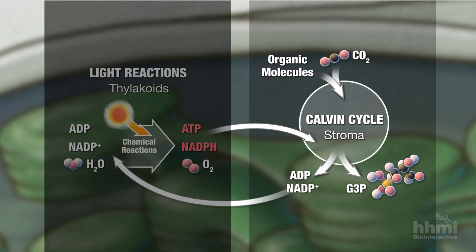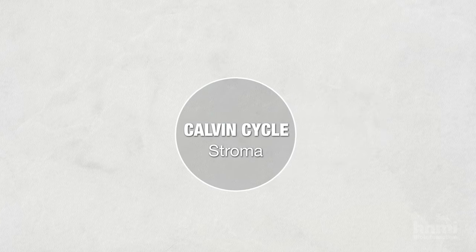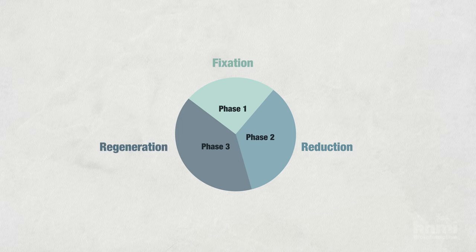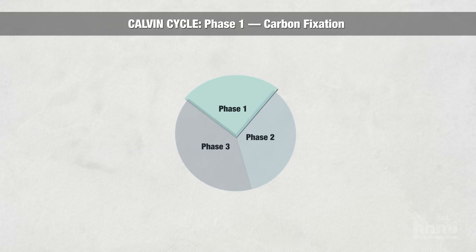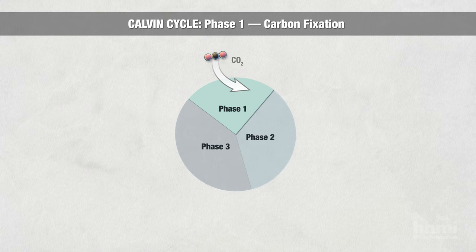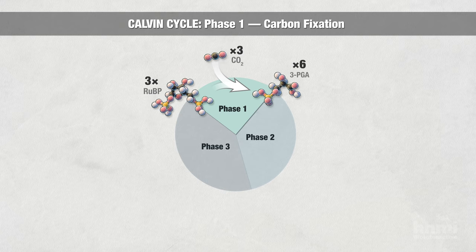The Calvin cycle takes place in the chloroplast's stroma, the watery clear fluid surrounding the thylakoids. It's helpful to think of the Calvin cycle in three phases: fixation, reduction, and regeneration. In phase one, inorganic carbon in the form of carbon dioxide from the air is incorporated into organic molecules, a process known as carbon fixation. Three molecules of carbon dioxide react with three molecules of ribulose bisphosphate, RuBP, to produce six molecules of a three-carbon molecule called 3-PGA. The enzyme RuBisCO catalyzes this reaction.